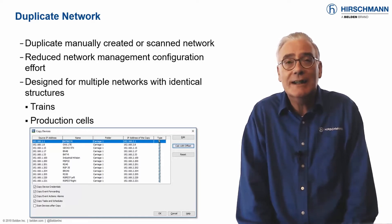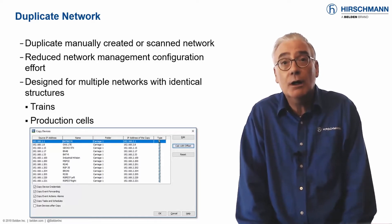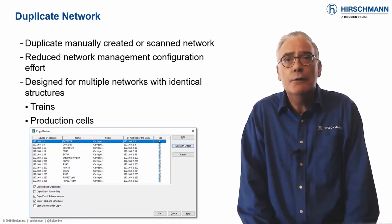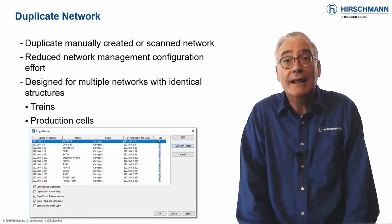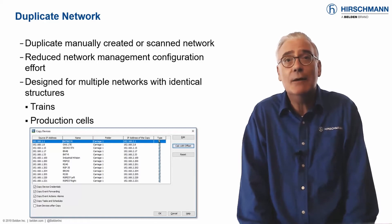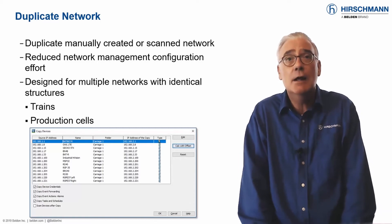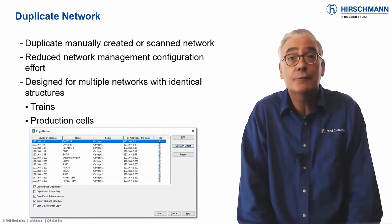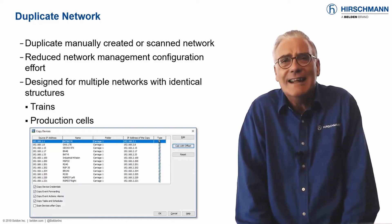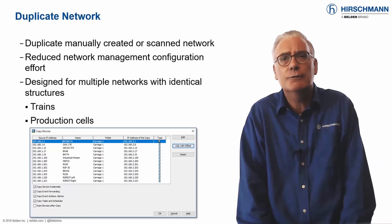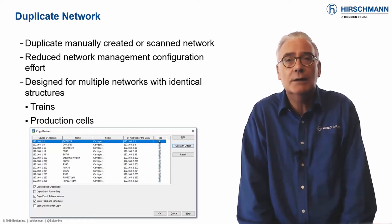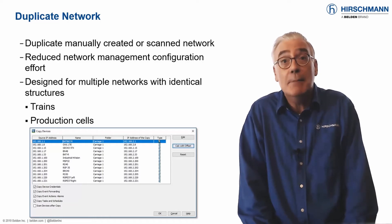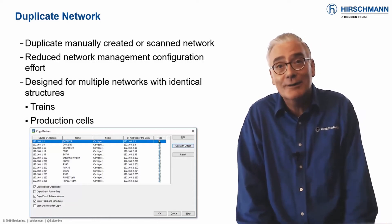So each carriage needs an identical network, but using different IP addresses. The duplicate network function can create these networks, including devices, IP addresses, passwords, alarms, and event forwarding. Of course, this is a niche function for certain OT networks. But what is niche today may be mainstream OT tomorrow.